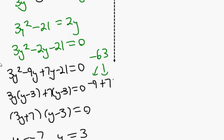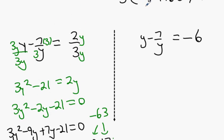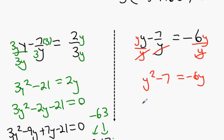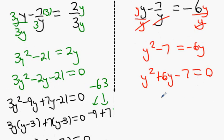Then you've got to go up to the other one. Do the same trick again. y on top, y on the bottom, y on the bottom y on top. Cancel the y's. y squared minus 7 equals minus 6y. Bring the 6y over to your side. y squared plus 6y minus 7 equals 0.